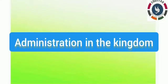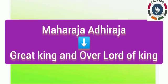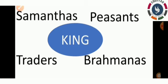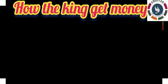The next topic is administration in the kingdom. Once a person became the new king, he would be given titles such as Maharaja Adhiraja — meaning great king and overlord of kings — and Tribhuvana Chakravarti, meaning lord of the three worlds. These new kings were supported by samanthas and the association of peasants, traders, and Brahmanas, with whose help the new king would rule his kingdom.